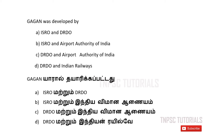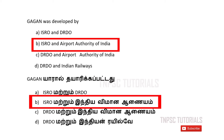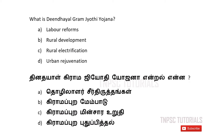B) ISRO and Airport Authority of India. C) DRDO and Airport Authority of India. D) DRDO and Indian Railways. The answer is B — ISRO and Airport Authority of India. Second one: What is Dindayal Gram Jyoti Yojana? A) Labor reforms.